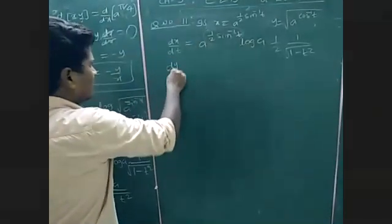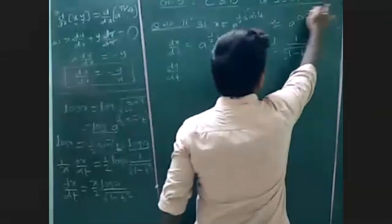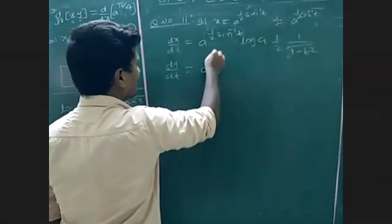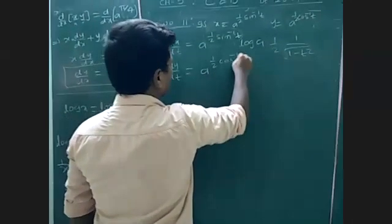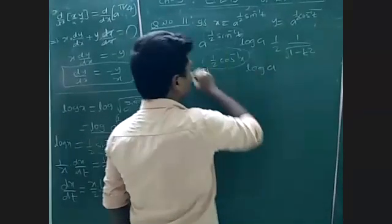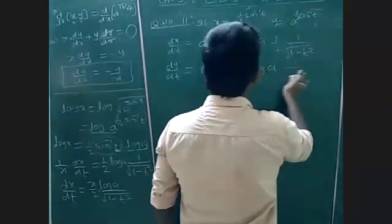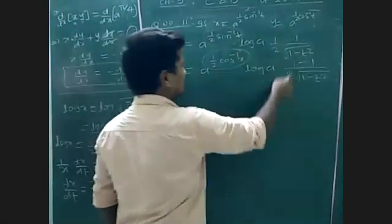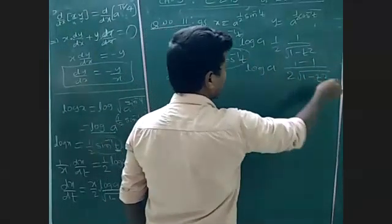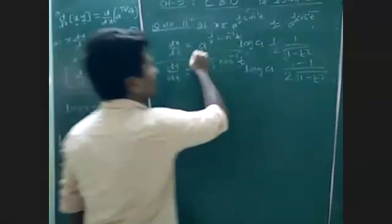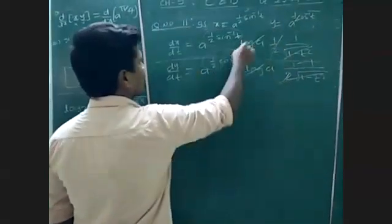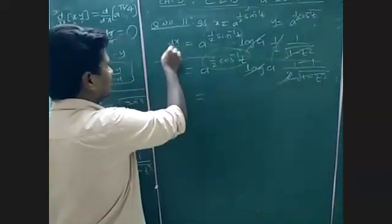In the same way, dy/dt — this can be written as 1/2 · a^x · log a. Again the derivative of this is 1 by (2√(1 − t²)). This is minus 1/2. The derivative of cos⁻¹(t) is 1/(1 − t²). Now if dy cancels, 2 cancels, log a cancels, then we get the remaining value.